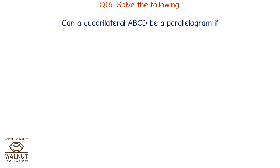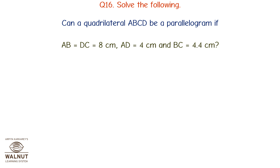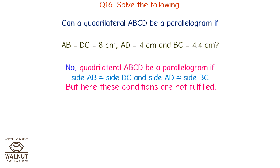Can quadrilateral ABCD be a parallelogram if AB equals DC equals 8 centimeters, AD equals 4 centimeters, and BC equals 4.4 centimeters? No — for a parallelogram, AB must be congruent to DC and AD must be congruent to BC. Since AD and BC are not equal, these conditions are not fulfilled, so ABCD is not a parallelogram.